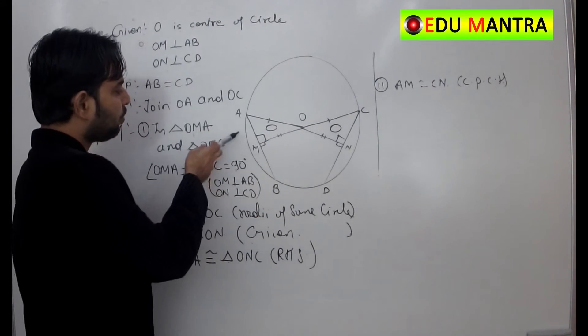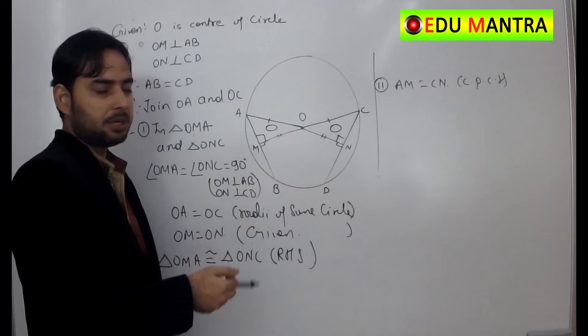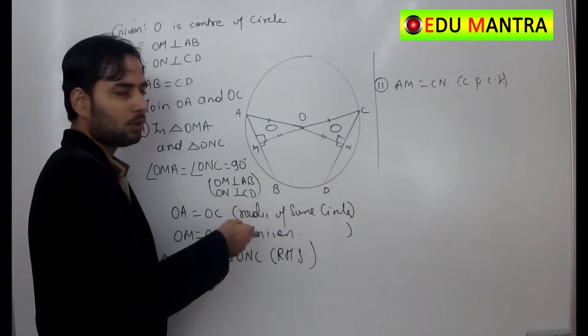If this is bisecting AB, means what? M will be the midpoint of AB. If M is the midpoint of AB, what does it mean? It means that twice of AM is equal to AB.